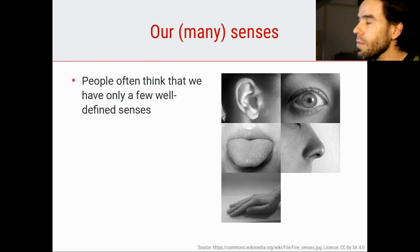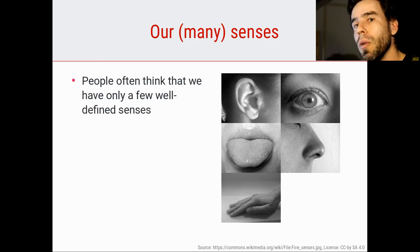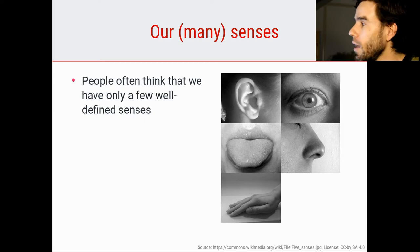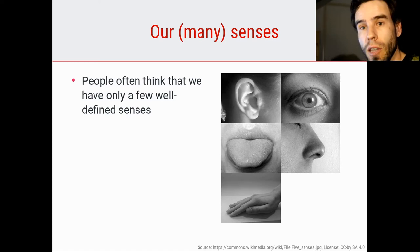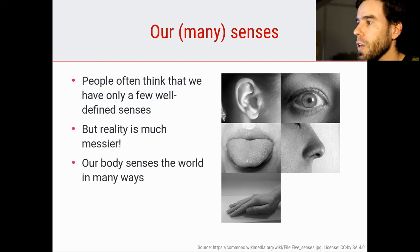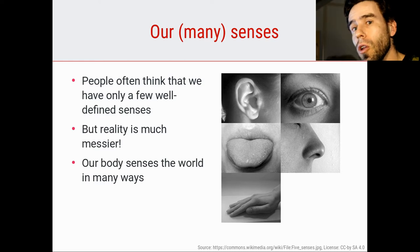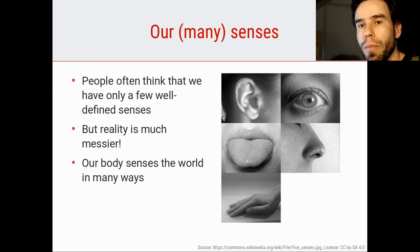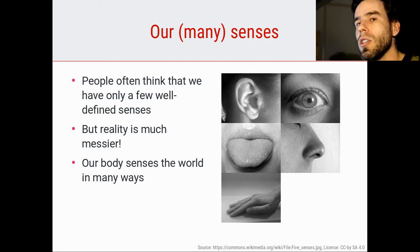How many senses do we have? Many people believe that we have only a few very well-defined senses, namely the five classic senses: hearing, vision, taste, smell, and touch. Now, of course, these senses do exist, but the reality is much messier. You can think of the body as a biological machine that has a lot of different ways to sense the world. You can categorize these senses in various ways, but any categorization is, in a sense, slightly arbitrary.